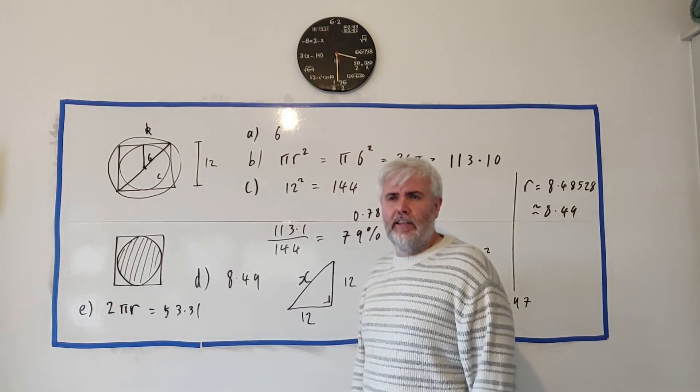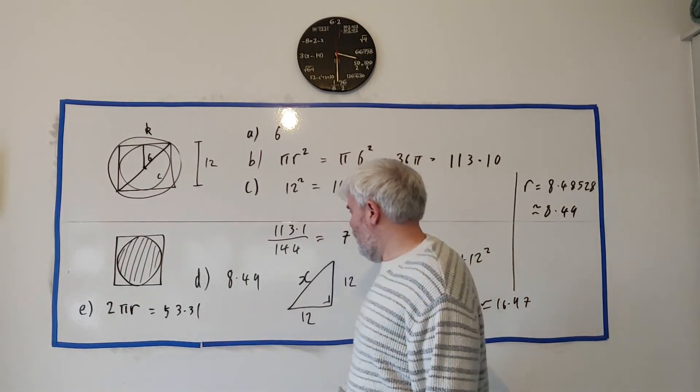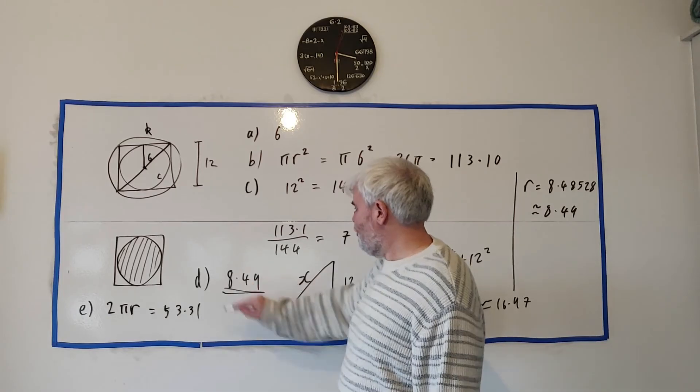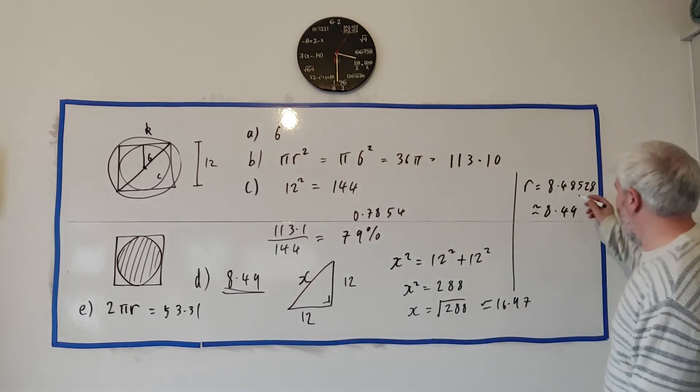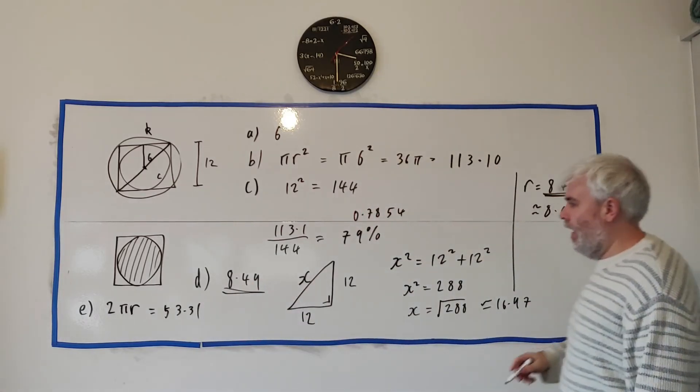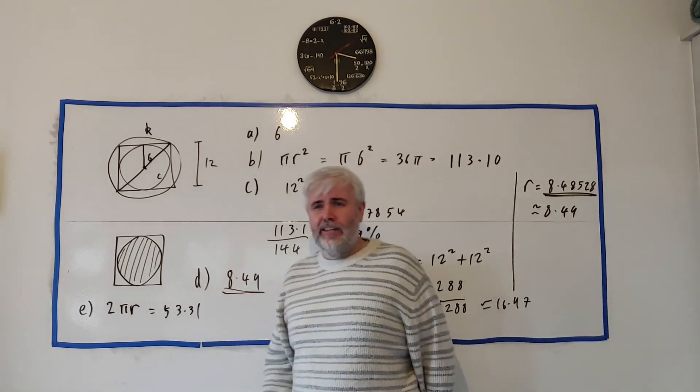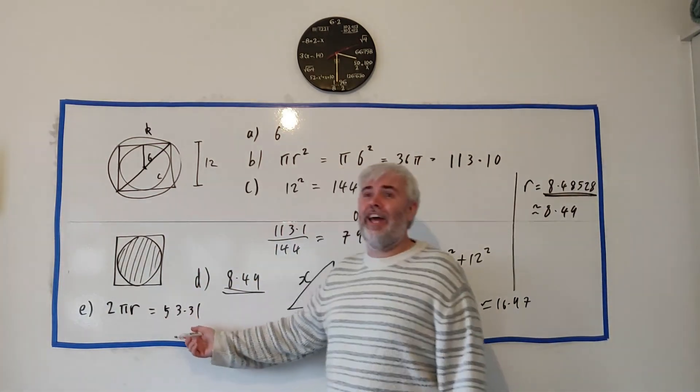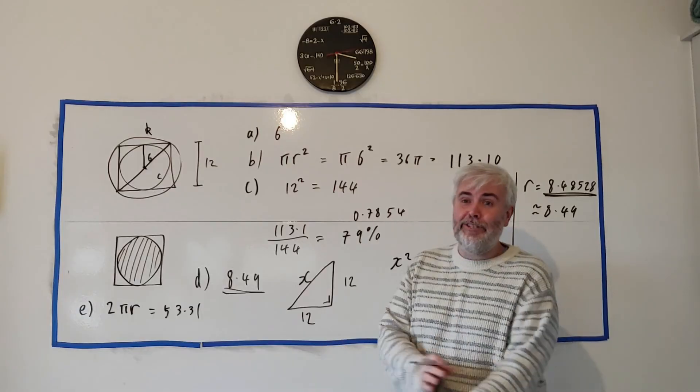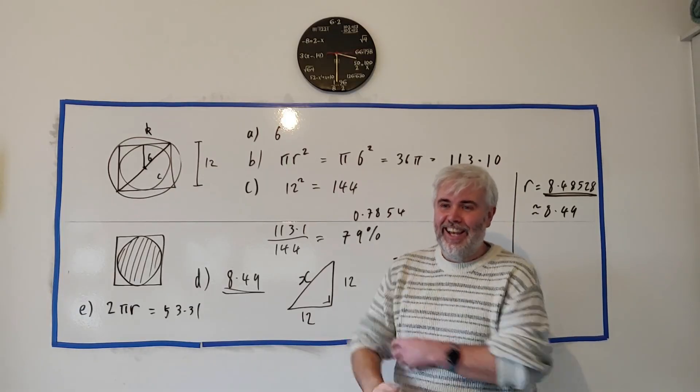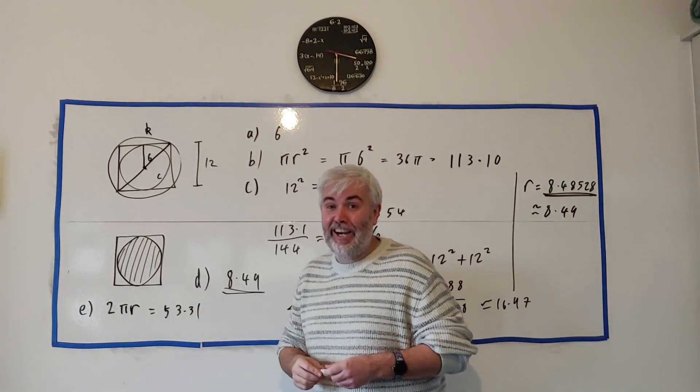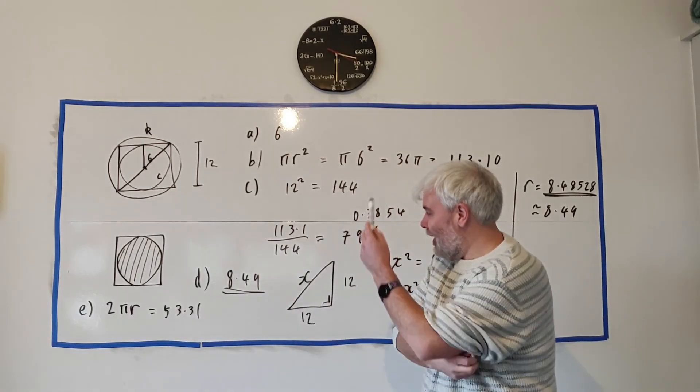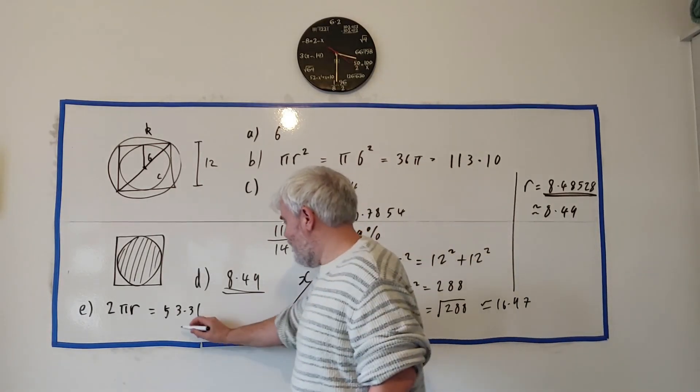Just one note here, the examiner's answer was different than this because I think they used this number whereas I used the correct number in the calculator. Still they'll give you full marks. Basically my answer is better than their answer so if that happens to you in the exam you'll get full marks. If you don't, you'd be able to argue it and you'll definitely get full marks.